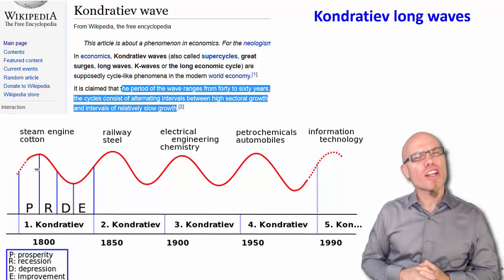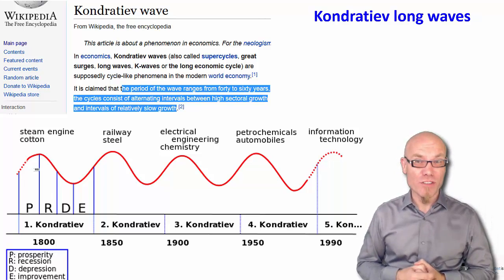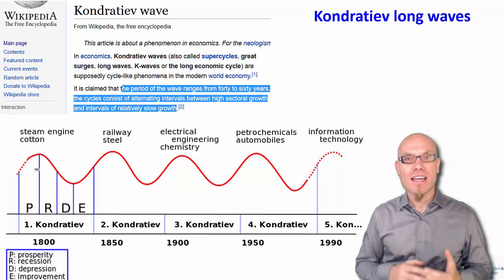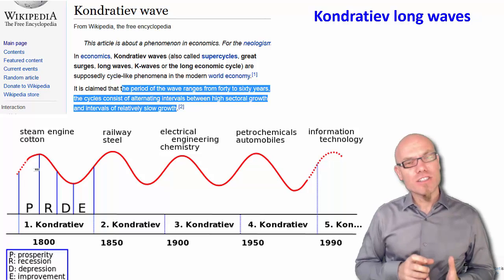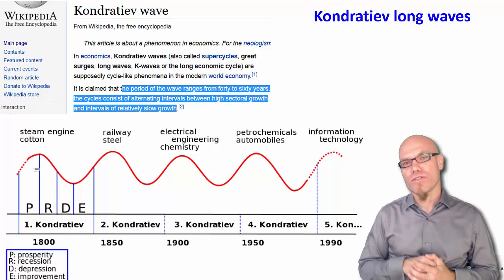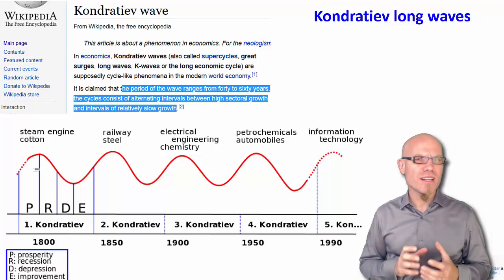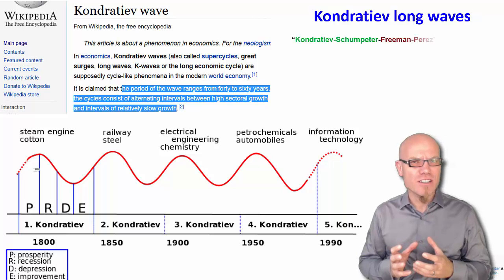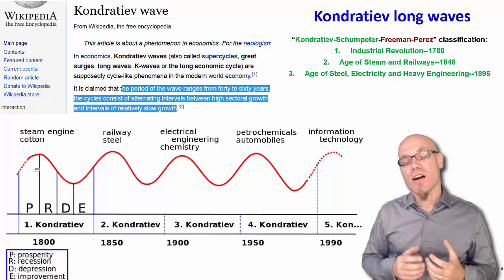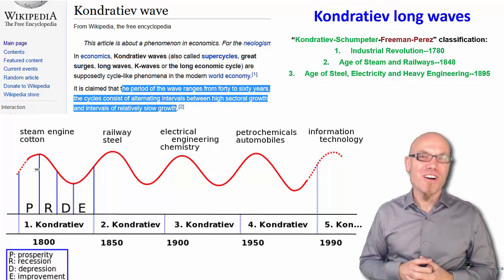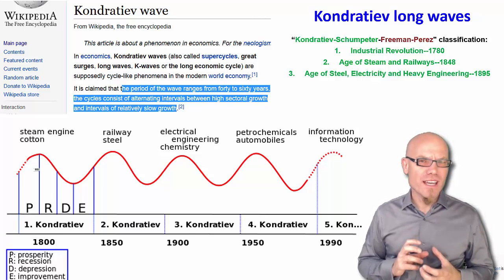The fundamental theory of how technology transforms society is based on the idea of long waves of human evolution. These are cycles that consist of alternating intervals of high growth and intervals of relatively slow growth. The Russian economist Kondratiev was the first to empirically detect that every 40 to 60 years there seem to be such alternating cycles. Together with the economist Joseph Schumpeter, they identified and characterized three of such waves.